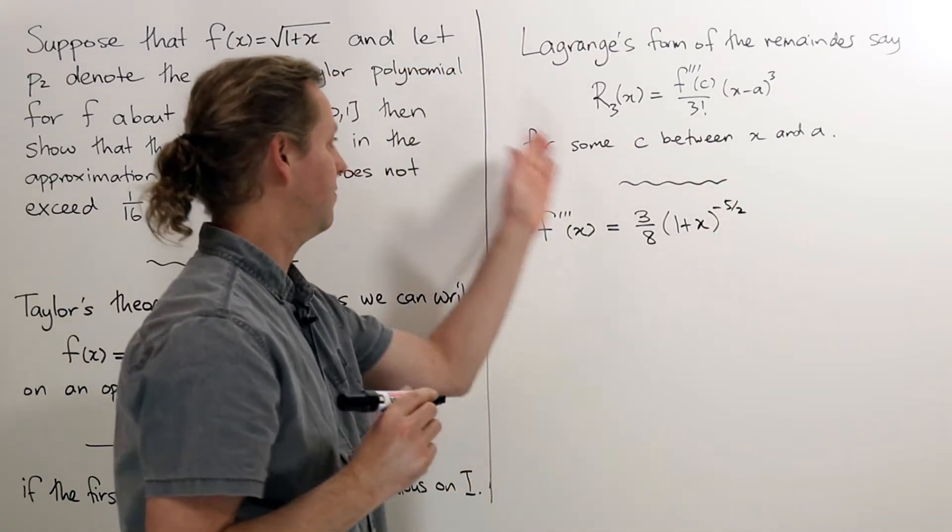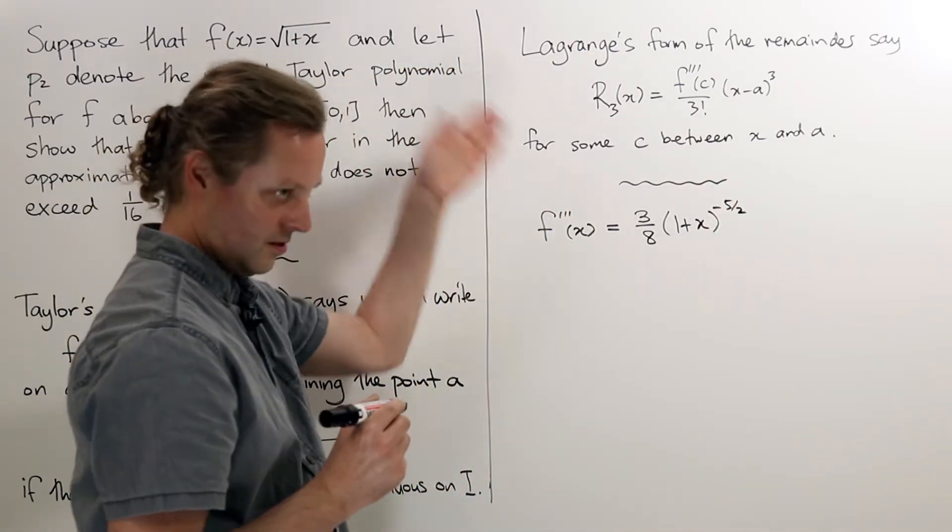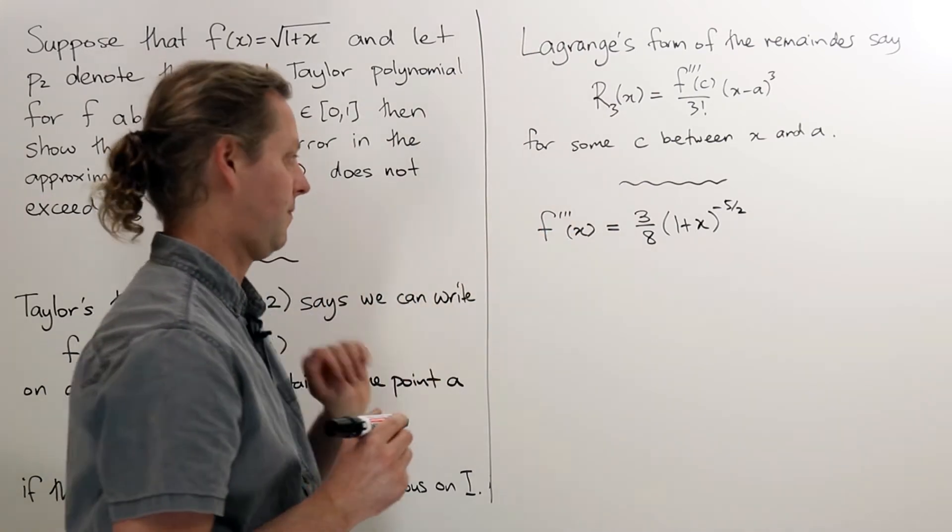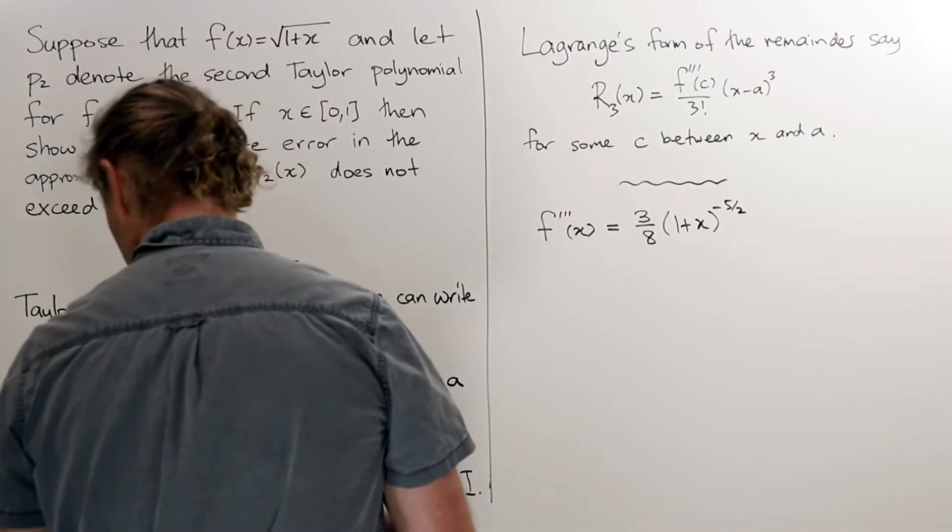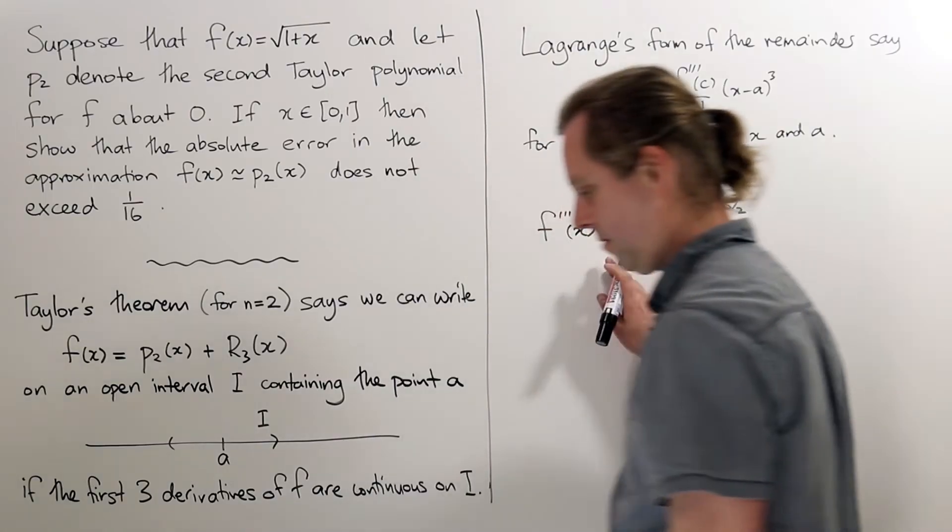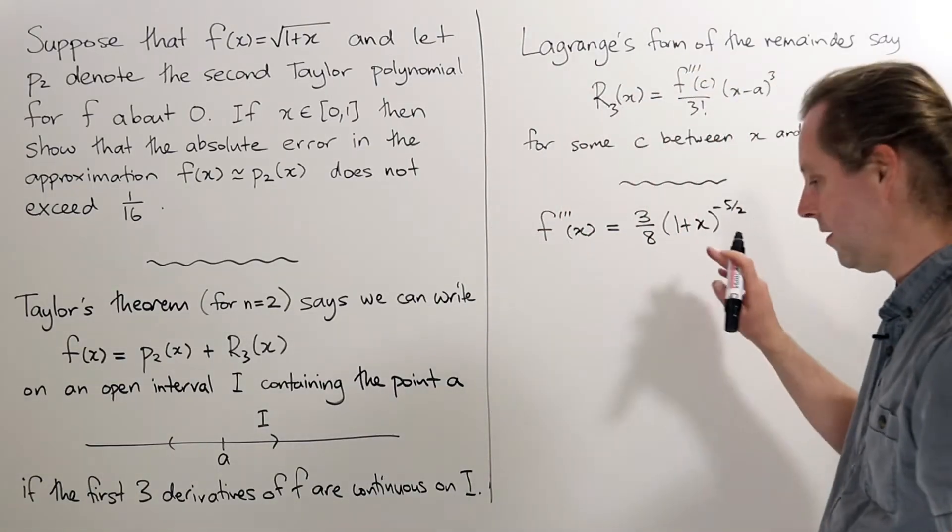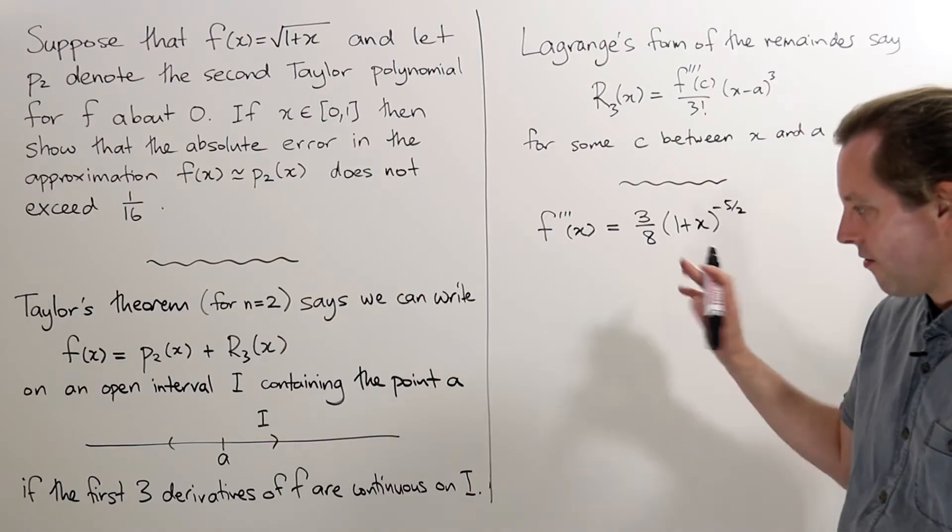To get this of course you would have to differentiate f once, twice and a third time. But this you can take to be what we have here. So now I'd like to calculate the error.